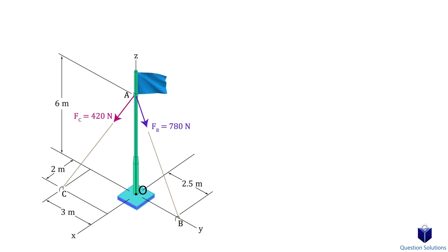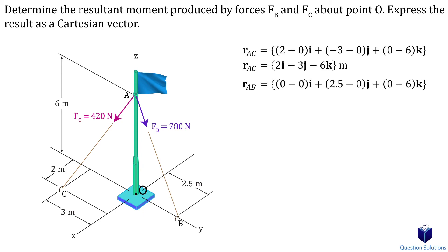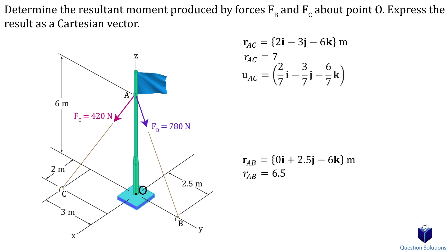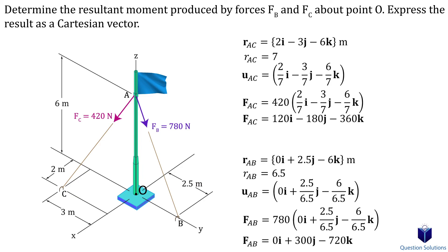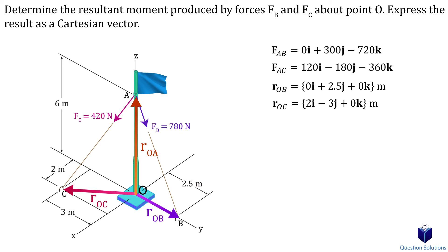Let's take a look at one last example, where we have to calculate the resultant moment created by two forces affecting the flagpole. The first step is to express both forces in Cartesian form. We need two position vectors — one from A to C and another from A to B. Next, we calculate the magnitude of each position vector, then a unit vector for each cable. Lastly, we multiply the magnitude of the force by the unit vector to get our forces in Cartesian form. Now we need two position vectors — I'm going to pick the vectors from O to B and O to C, though you can pick a position vector from O to A as well and still get the same answer, since the position vector can be from point O to any location on the line of action.